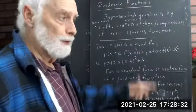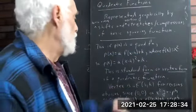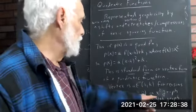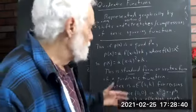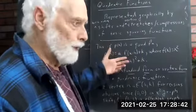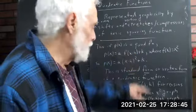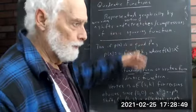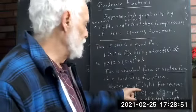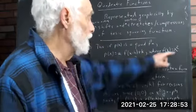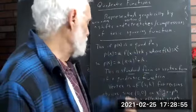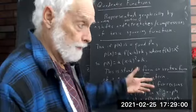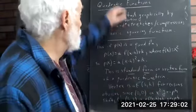The vertex is at (h, k), and that should be clear: since (0, 0) is on the graph of f(x), and since (0, 0) is the vertex of x², then (h, k) must be the vertex of a·f(x−h)+k. That's your vertex form.